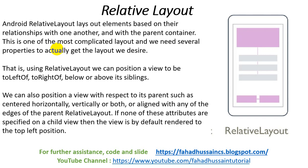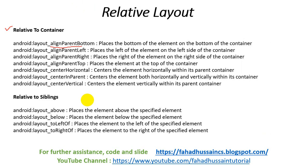So the properties of these, which are very important — I have shown them on the slide briefly. When we implement practically, it will be better. First of all, relative to the container — which is our overall container, which we call layout or activity — the first property is layout_alignParentBottom, which means place the bottom of the element on the bottom of the container. From left, right, top, center horizontal — meaning horizontally centered — which will come to your container. Then center in parent, which will come to the center of the parent, and center vertical. So these properties will move the object to your container.